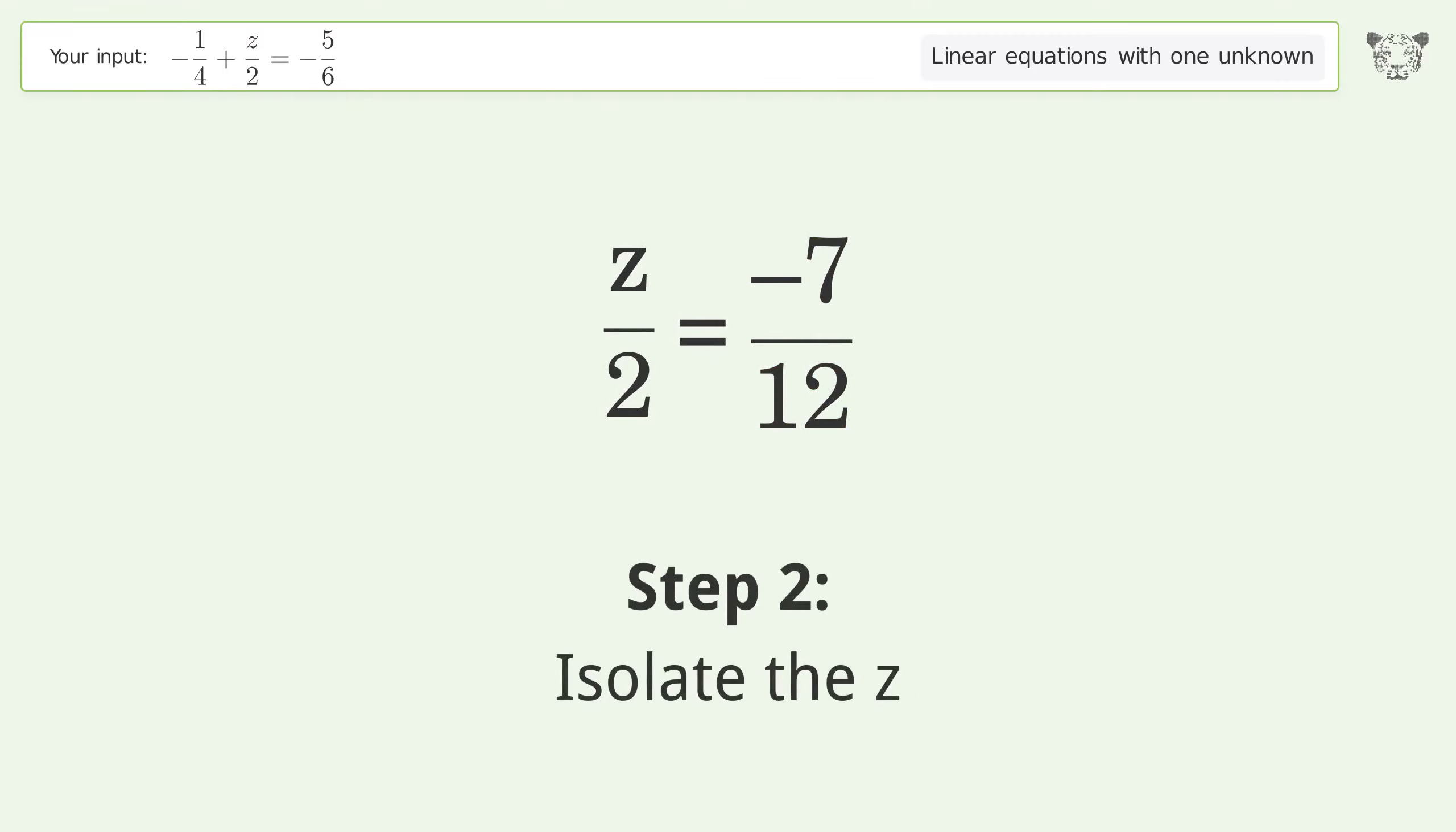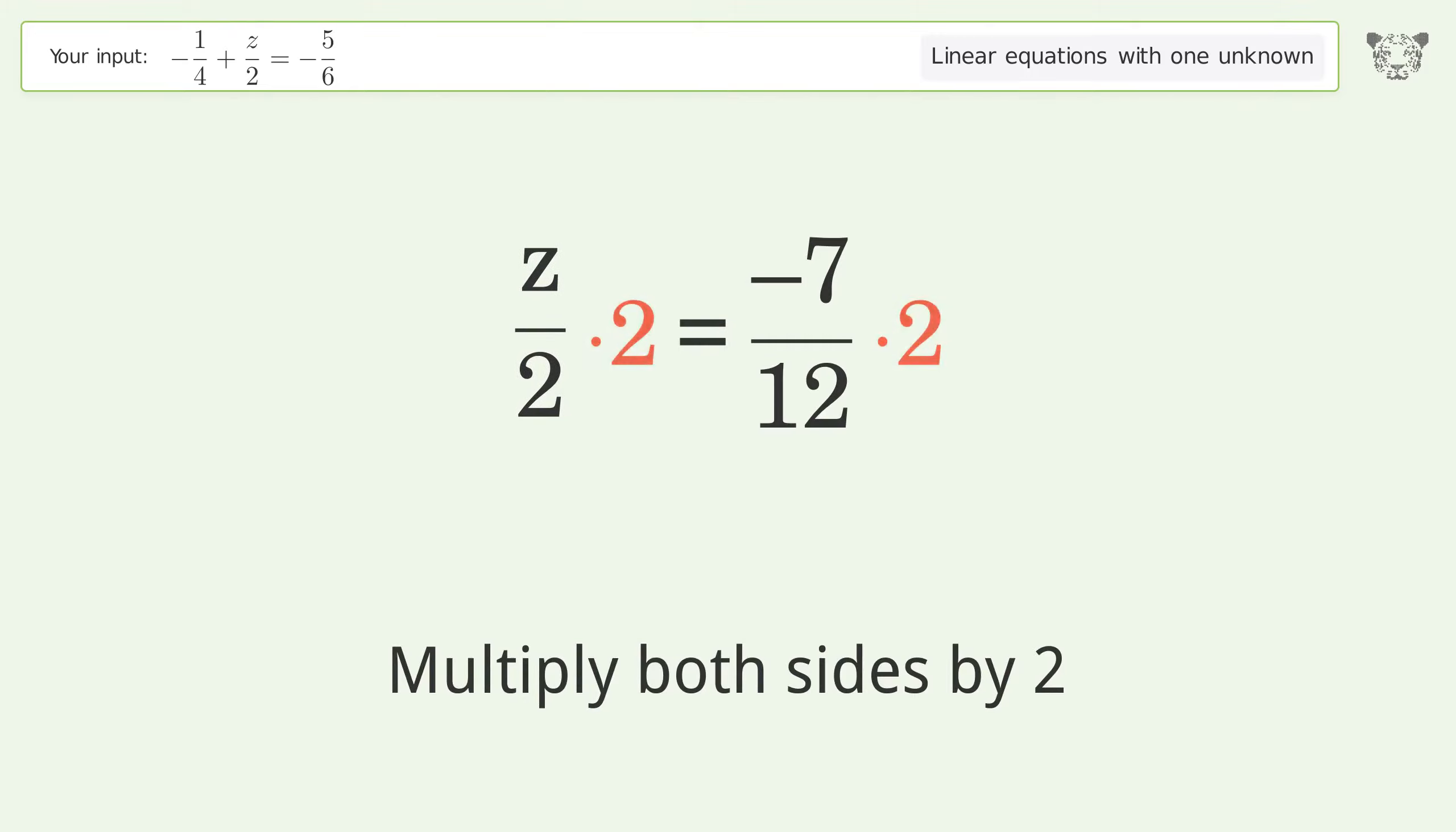Isolate the z. Multiply both sides by 2. Group like terms.